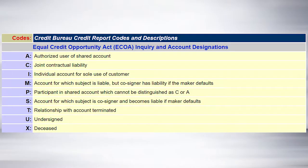Also, what the ECOA does is it requires them to code the personal liability of the account holder. So take a look at these codes. These codes here are extremely important to have a good understanding of, especially when reviewing negative information. For example, if you've got a derogatory account and the account holder is listed as an authorized user, this is something we know that's easily taken off that credit report because authorized users are not contractually liable for the account. They only have access to the account.